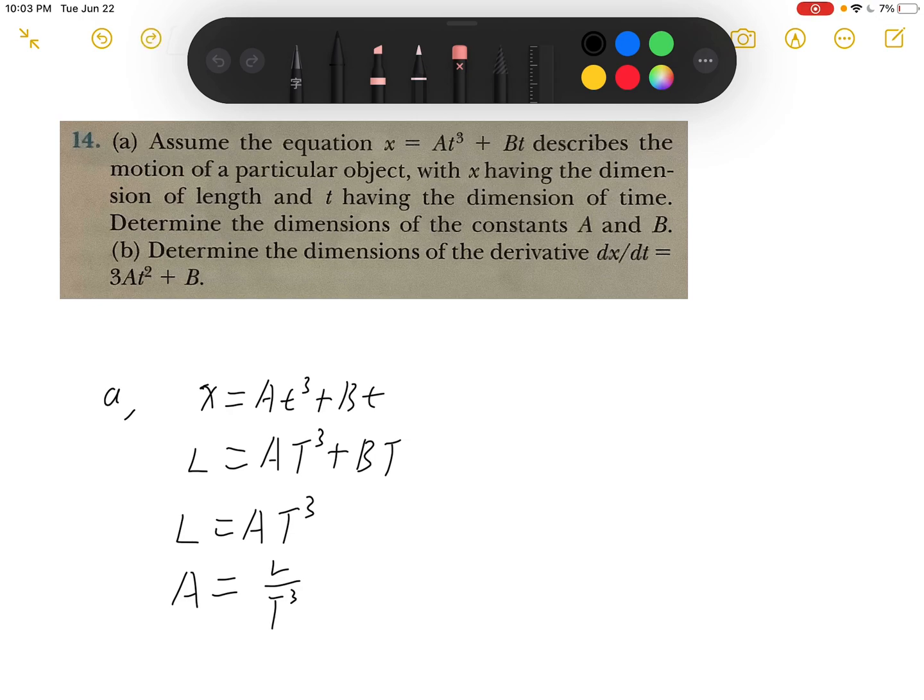So this will be the dimension of constant A. And the dimensions for B will be the same. L equals B times t, and B will be L over t.